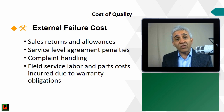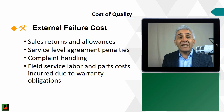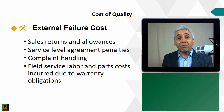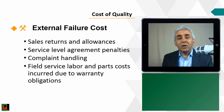Examples of external failure costs include sales returns and allowances, service level agreement penalties — for instance, a website host guaranteeing 99.8% uptime and refunding if it goes down — complaint handling departments, field service labor, replacement parts, and warranty obligations.